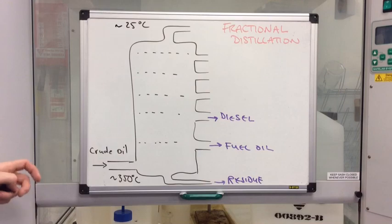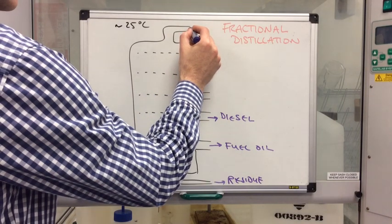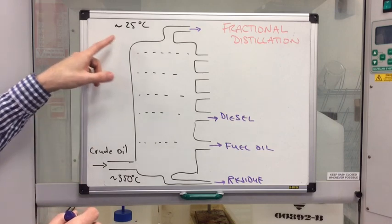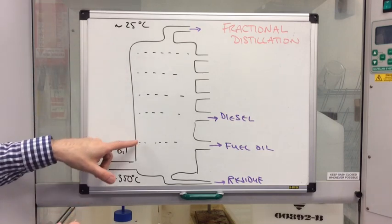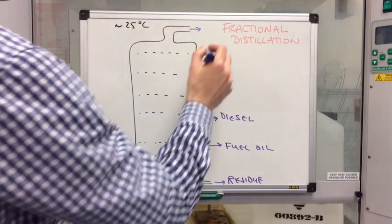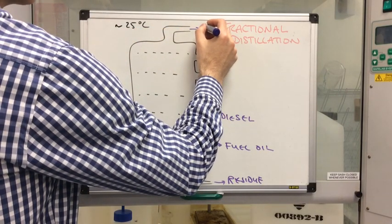We'll go straight to the top now. The very, very small hydrocarbons would not actually condense at all and they would remain gaseous all the way to the top here, and so these come out as gases and this is called the gas fraction.